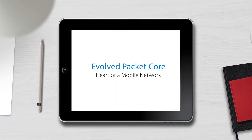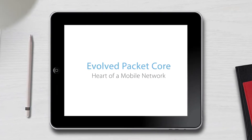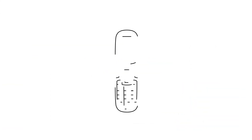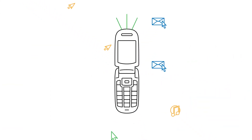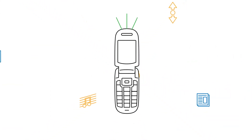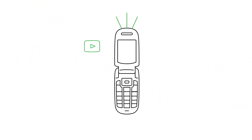Evolved Packet Core. A long time ago, people generally used phones to talk. Sending data over cellular networks was almost non-existent.